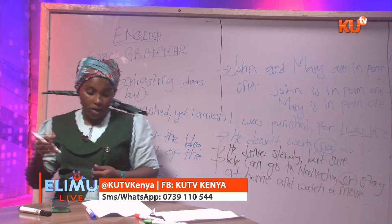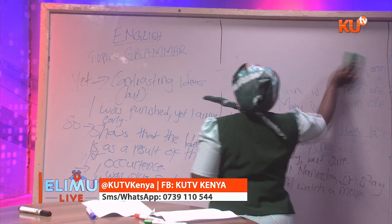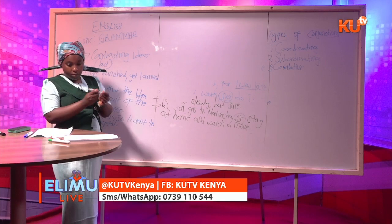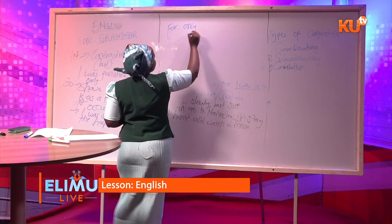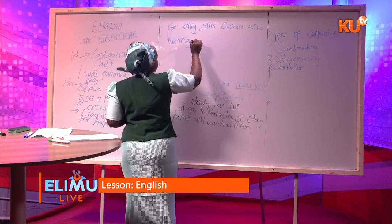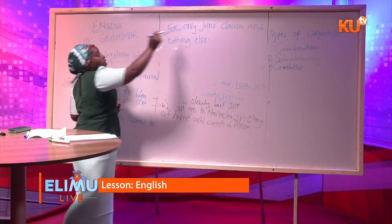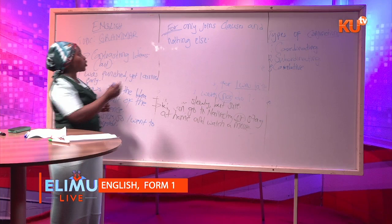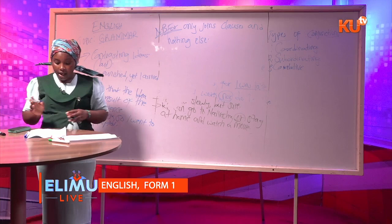But 'for,' the conjunction 'for,' only joins clauses and nothing else. All the others can join words, phrases, and clauses, but 'for' does not join words and phrases — it only joins clauses. That is an important note to remember.